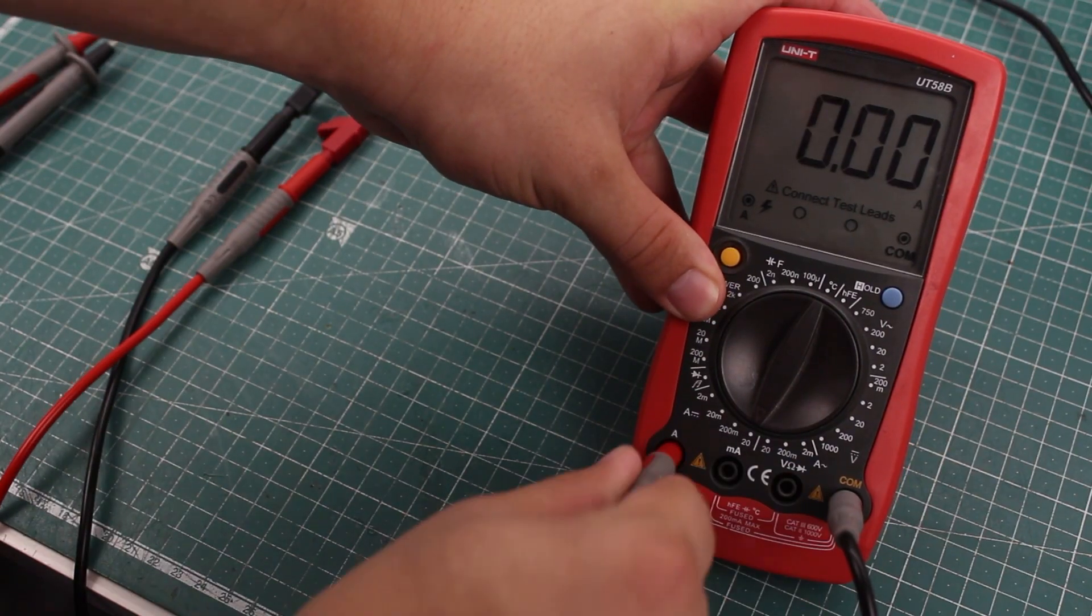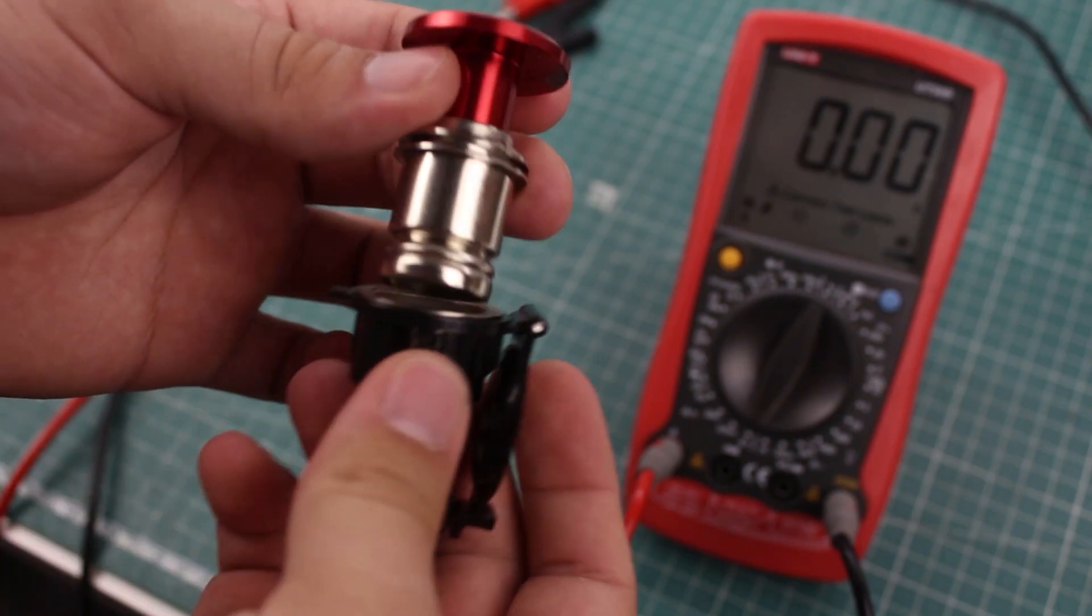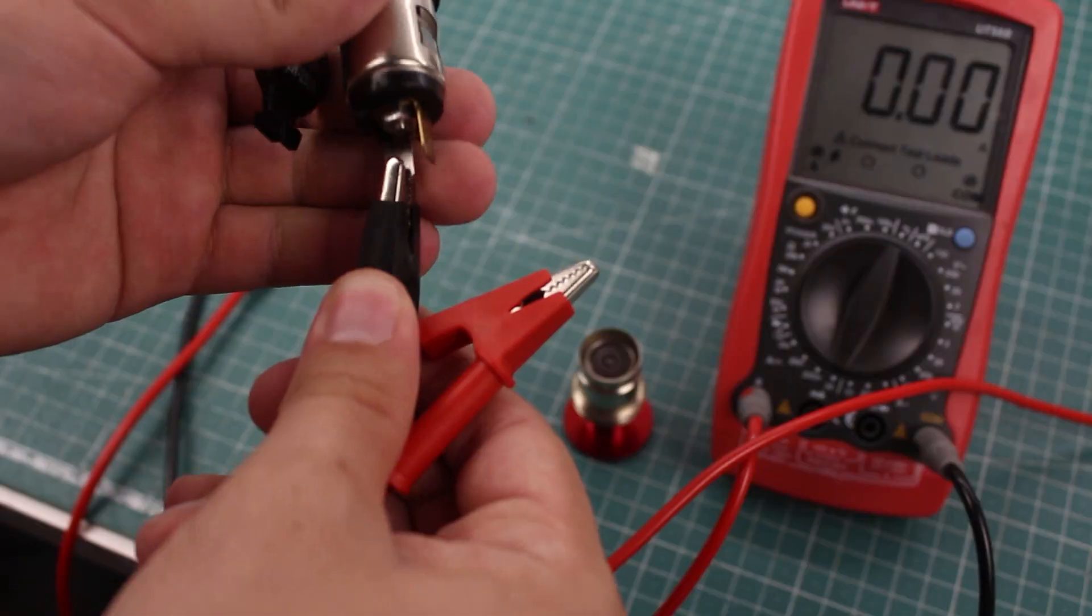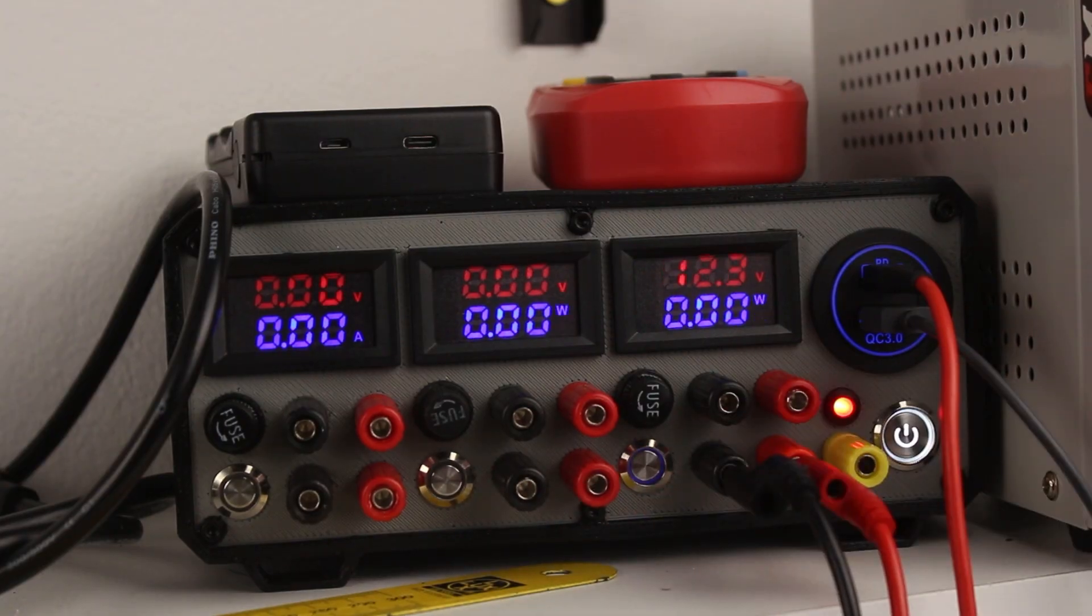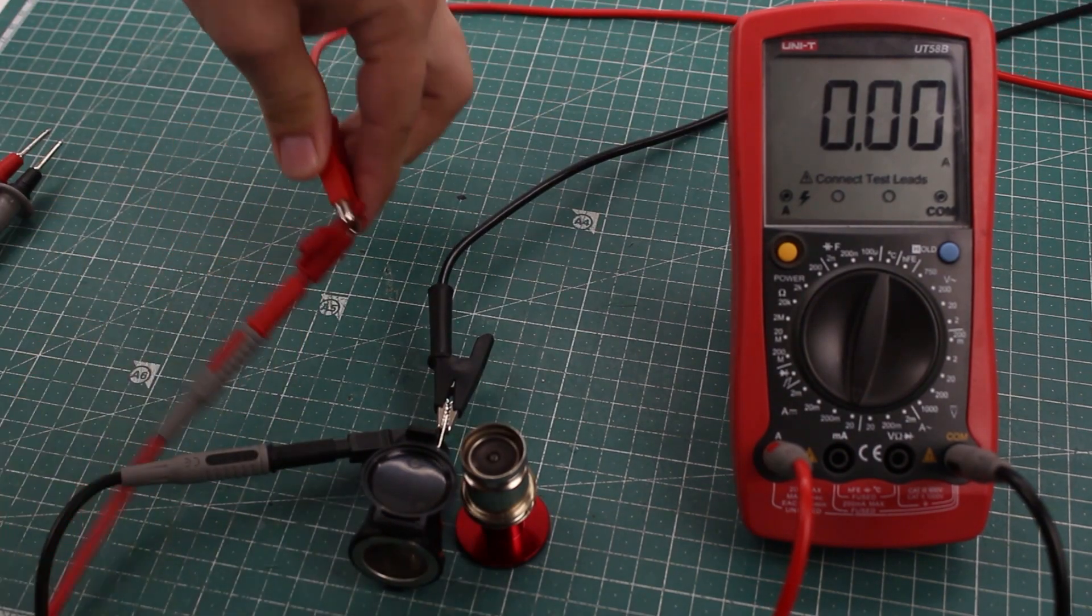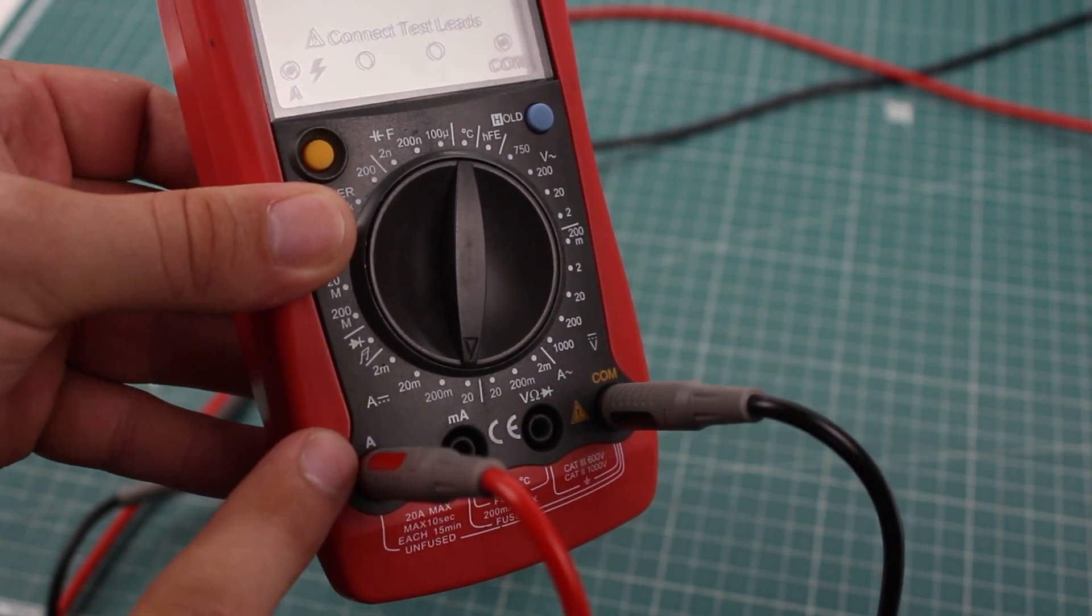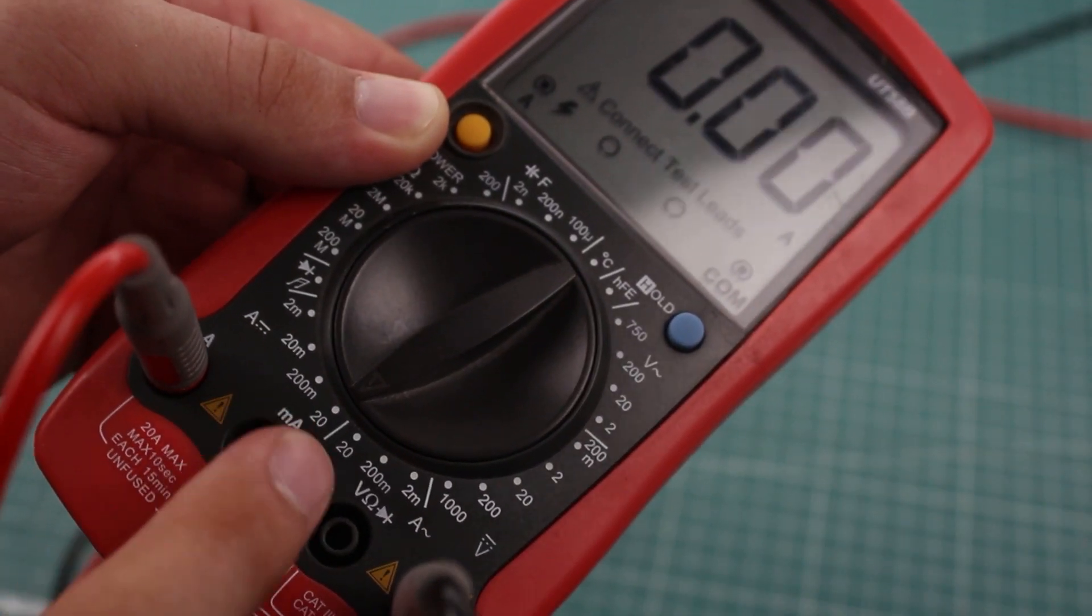Next, let's measure something with the 20A port. Here I have a car lighter which draws around 8A. I'll connect it to the 12V rail on my power supply and connect the meter in between. This time, the 20A port is used and the selector switch is set to 20A DC.